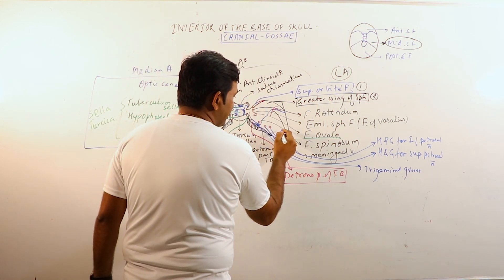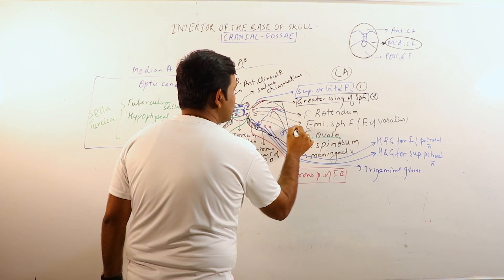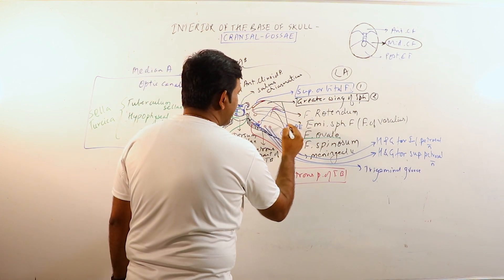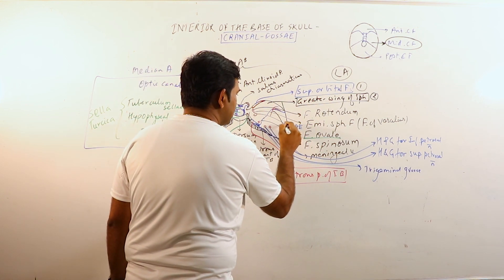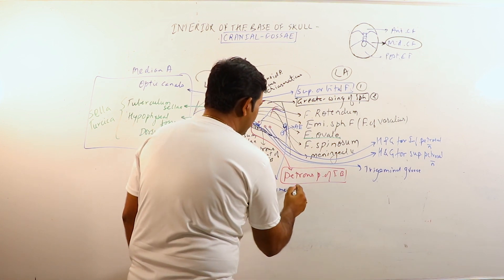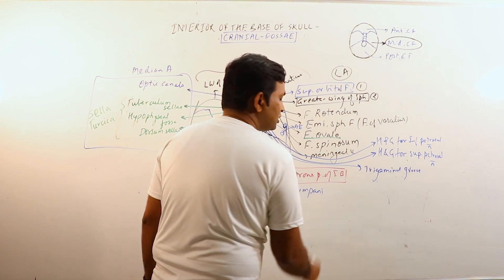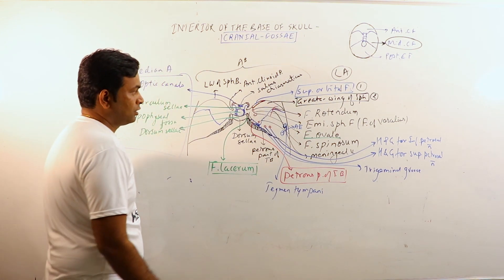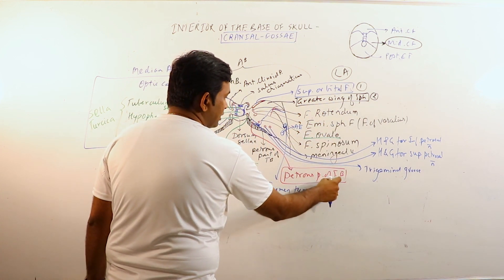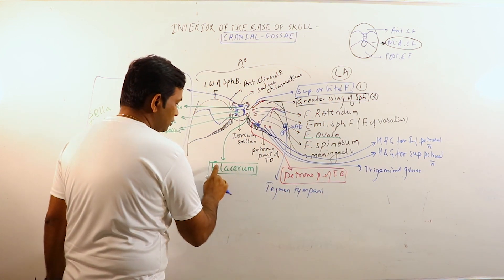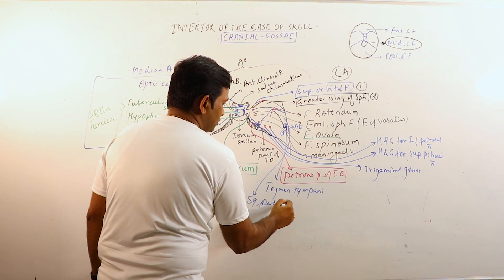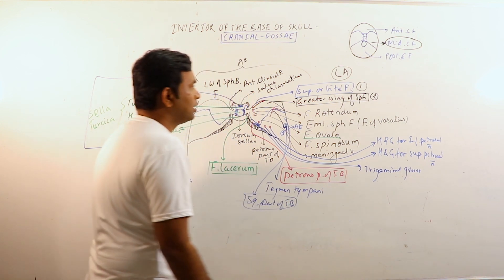More posterolateral to the trigeminal groove, there is the arcuate eminence. Superoanterior to the arcuate eminence is the tegmen tympani, which is a bony plate that forms the roof of the middle ear. The lateral area is thus formed by the superior orbital fissure, greater wing of the sphenoid, petrous part of the temporal bone, foramen lacerum, and the squamous part of the temporal bone.